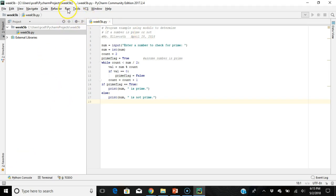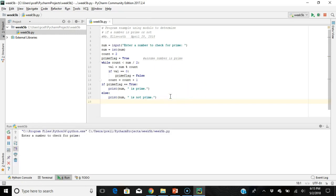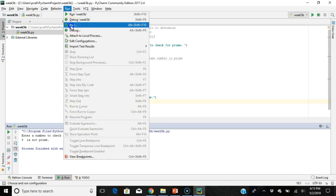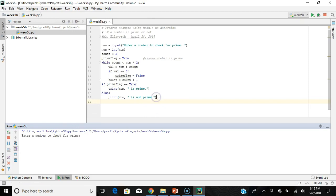So, let's go ahead and run it. Let's put a value in there like 8. 8 is not prime. Let's run it again. And it finds that 11 is prime. Let's try some larger numbers.